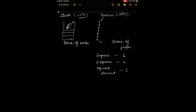Stack, as we know, is a LIFO data structure, which stands for Last In First Out. You can clearly visualize this as a stack of books — the book that is the last one to go into the stack will be the first one to be picked.